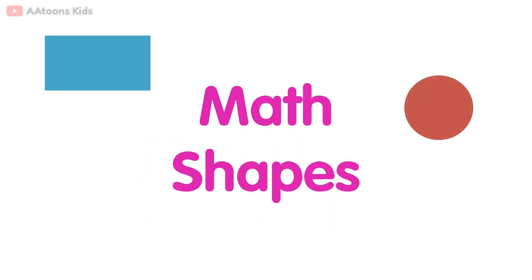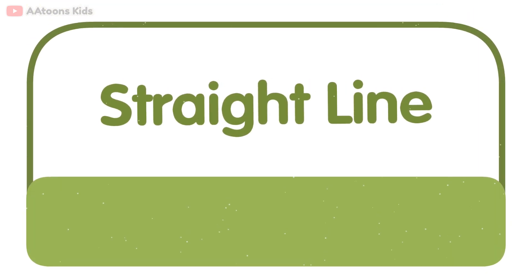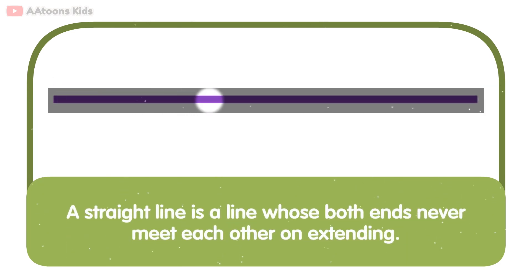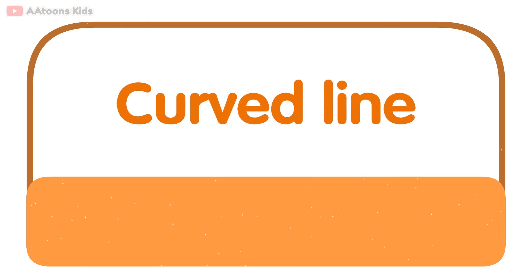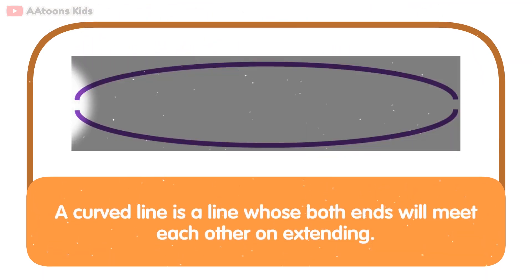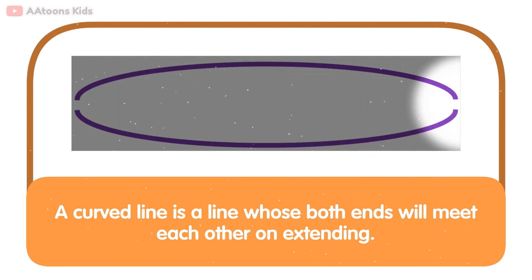Math Shapes. A straight line is a line whose both ends never meet each other on extending. A curved line is a line whose both ends will meet each other on extending.